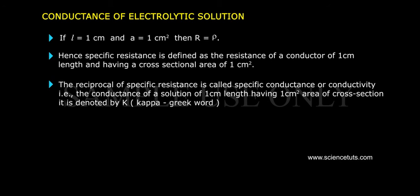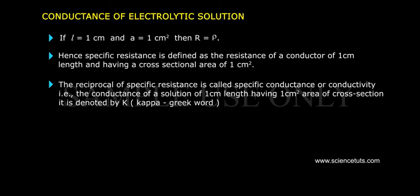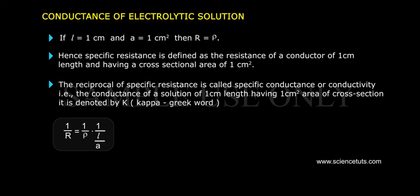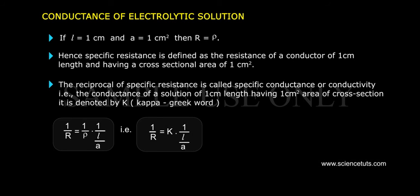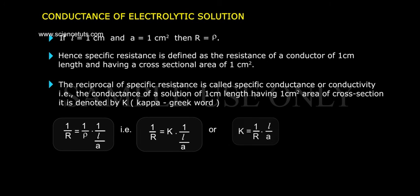Specific conductance is denoted by κ (kappa). The relationship is: 1/R = (1/ρ) × (1/(L/A)), which gives 1/R = κ × (1/(L/A)), or κ = (1/R) × (L/A), or κ = C × (L/A).